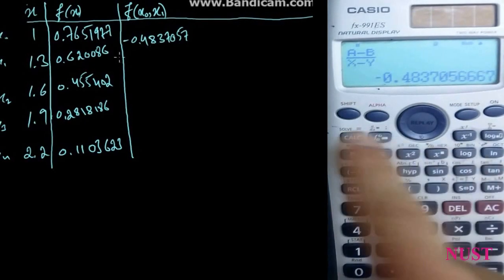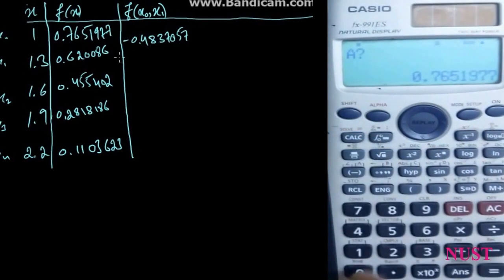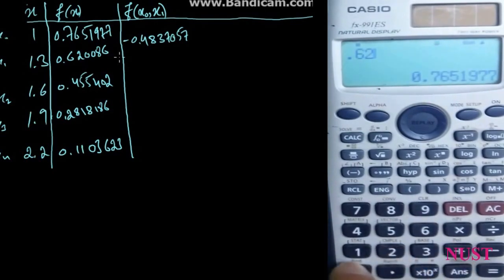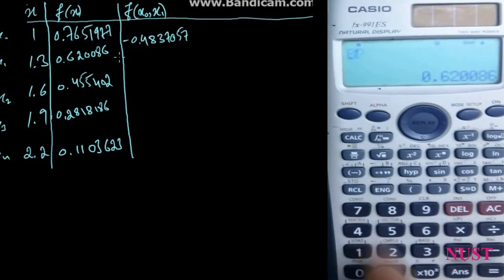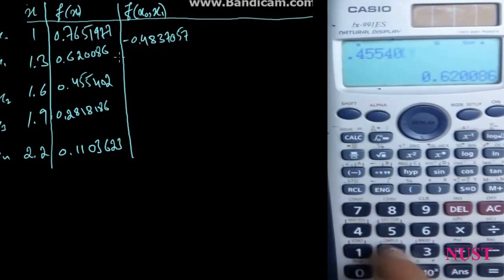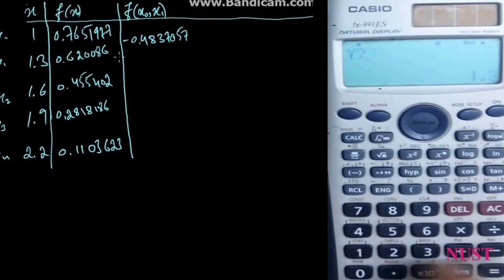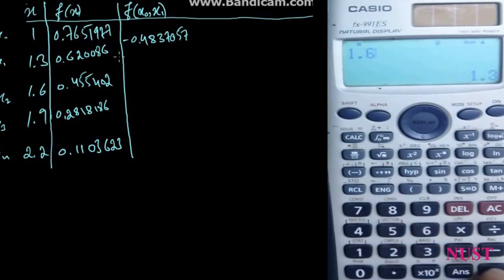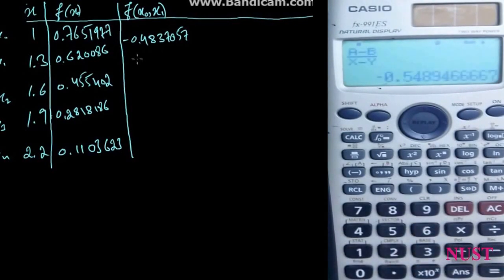Go back to the equation, press Scale C. Enter for A: 0.620086, for B: 0.455402, for X: 1.3, and for Y: 1.6. We get minus 0.54896.